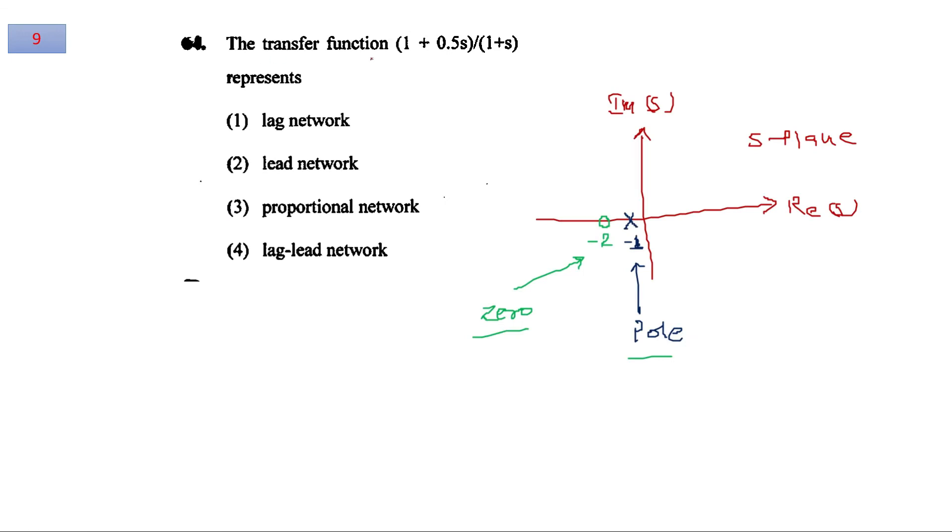Question number 9, the transfer function is given, which is 1 plus 0.5s over 1 plus s. We have to comment from the pole zero plot which type of network it represents. If you draw the pole zero plot, there is one pole at minus 1 and one zero at minus 2. Whenever you see this kind of pole zero pattern, if pole is nearer to the origin, this kind of network is always known as a lag network.